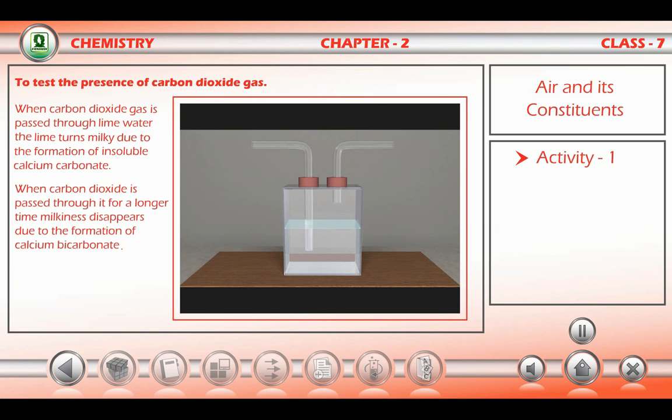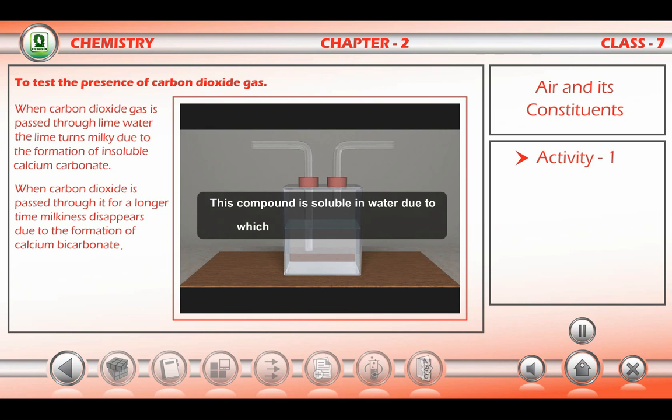The equation is CaCO₃ + CO₂ + H₂O → Ca(HCO₃)₂. This compound is soluble in water, due to which the milkiness disappears.